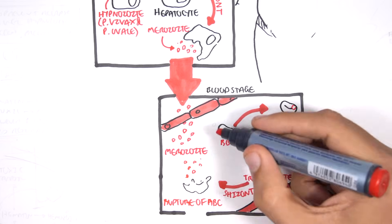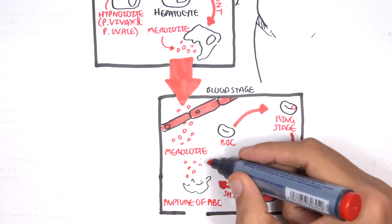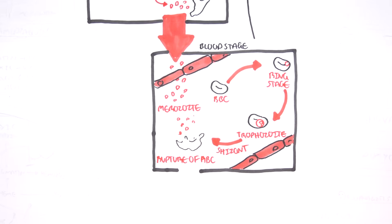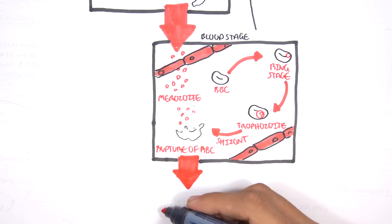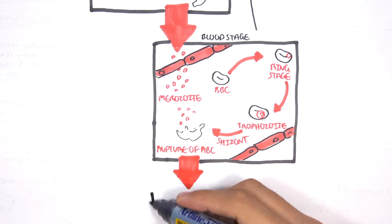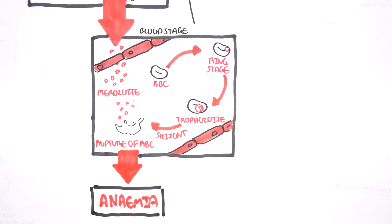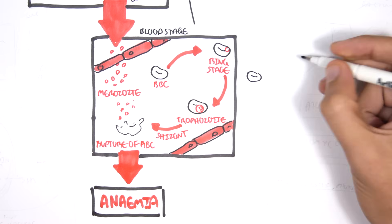The rupturing of the red blood cells is responsible for anemia in malaria. The rupturing of the red blood cells are also coincidental with the clinical manifestations of malaria, which are the fever, rigor, chills, and tremors.